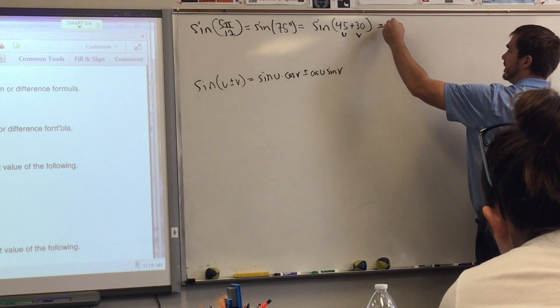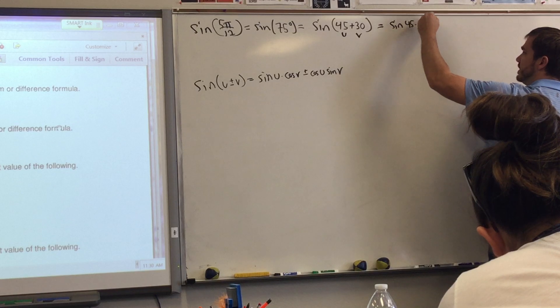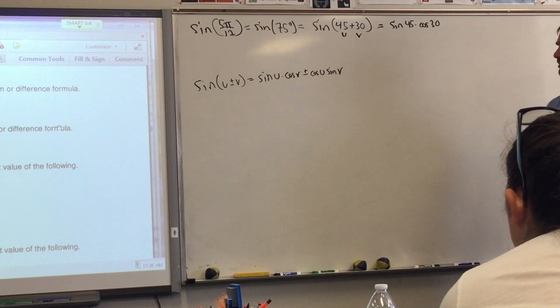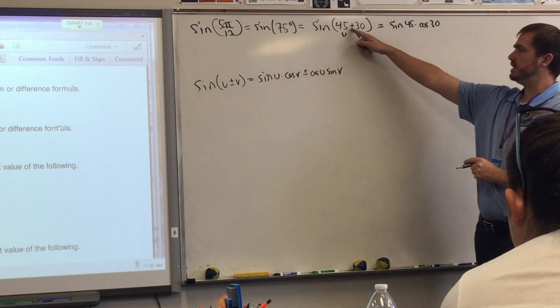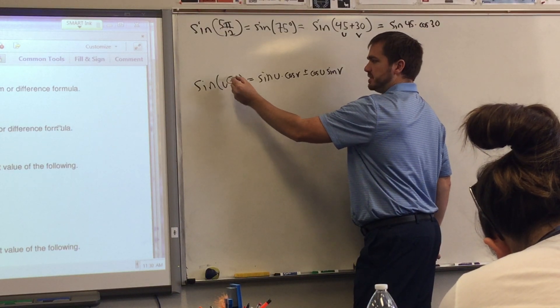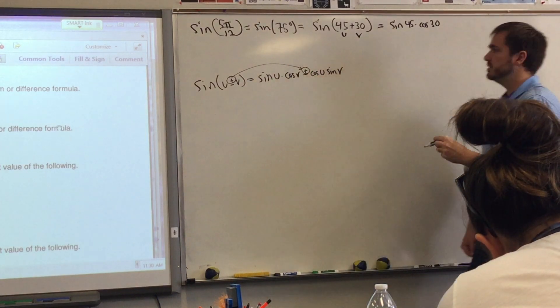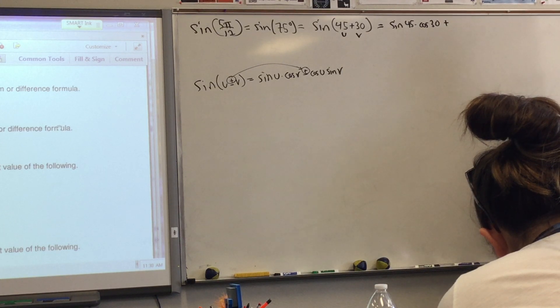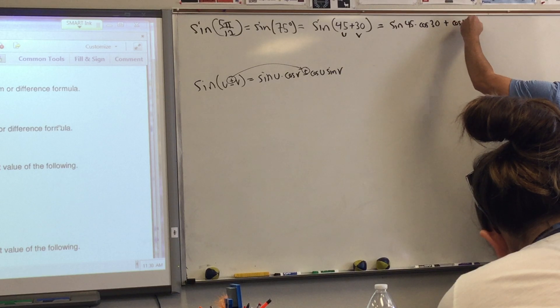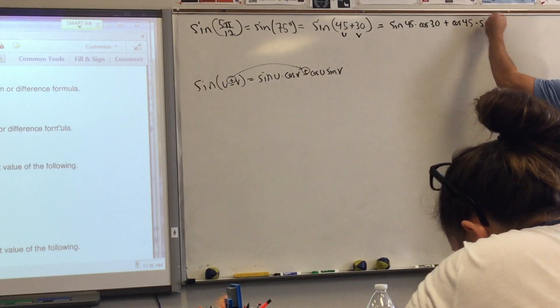So just plugging this into the formula, we have sine 45 times the cosine 30. Is it going to be plus or minus, folks? I've got a plus right here. You go over here to the formula and you say, where's the plus? The plus is on the top position. So I'm going to look over here to see what's on the top position. It's also the plus. So I'll put a plus right there. Cosine u, so cosine 45 sine of v, so sine of 30.